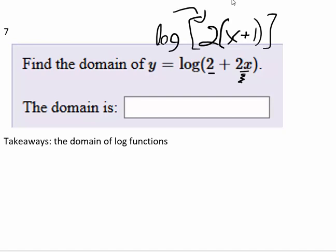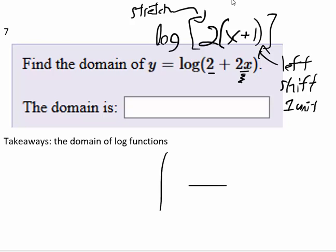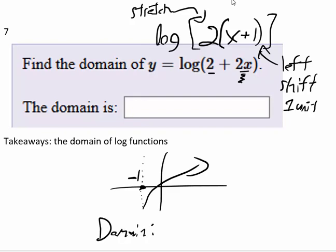So the 2 is acting as a stretch and the 1 is acting as a left shift of 1 unit. I'll make a dotted line right here at negative 1. The graph is going off to the right, so my domain starts at negative 1 and then goes to the right off to infinity. Negative 1 is a vertical asymptote, the model approaches negative 1 but never reaches it, so we're going to use parentheses.